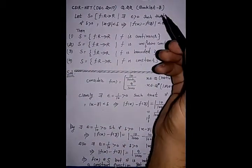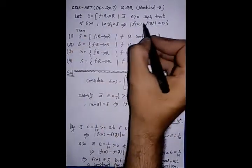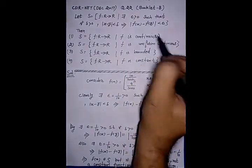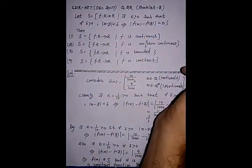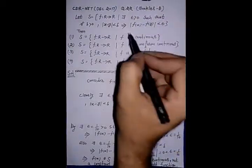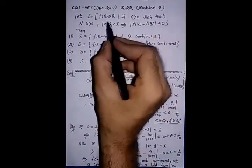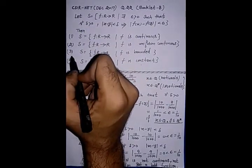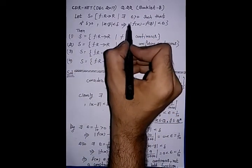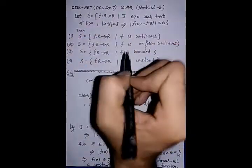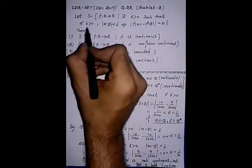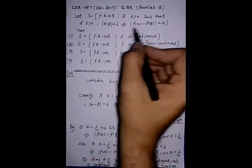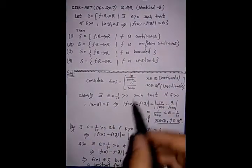This condition given in the question looks like the condition of uniform continuity, but actually it is not the definition of uniform continuity — there is a big difference. In the definition of uniform continuity, for every given epsilon there exists a delta, not for each delta. So this definition is different from the definition of uniform continuity.